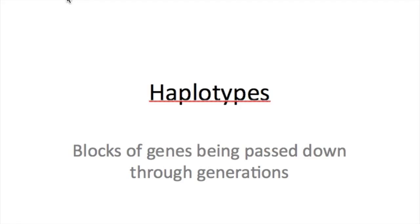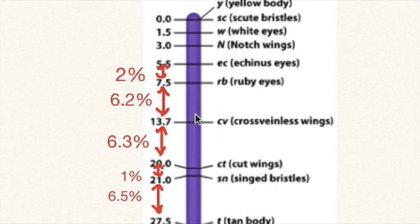Haplotypes are blocks of DNA inside which there is a low chance of genetic recombination. Take for example that between cut wings and singed bristles, there is no more than a 1% chance in this region of DNA that genetic recombination will occur.